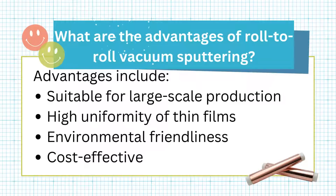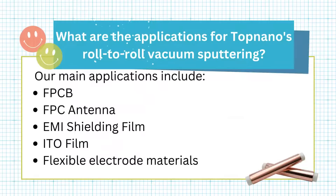What are the applications for Top Nano's roll-to-roll vacuum sputtering? Our main applications include FPCB, FPC antenna, EMI shielding film, ITO film, and flexible electrode materials.